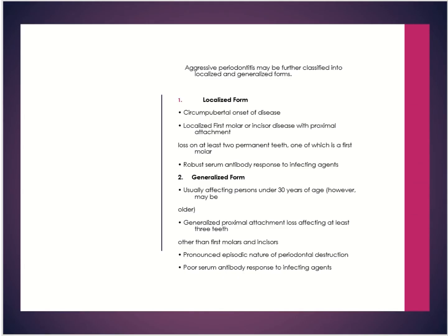Localized forms involve less than 30% of the total dentition, with attachment loss on the first molars and incisors and two other permanent teeth including one first molar. Generalized forms involve more than 30% of the dentition, are more often found in patients less than 30 years old, and involve three teeth other than the first molars and incisors.